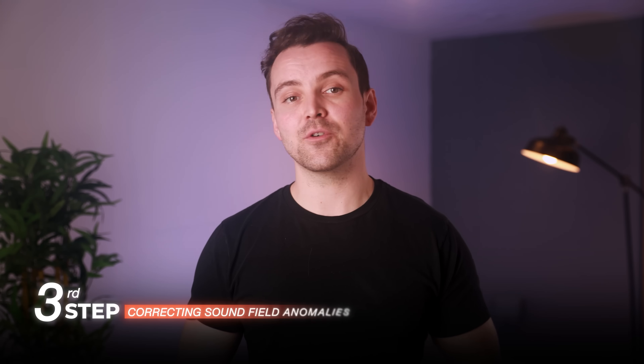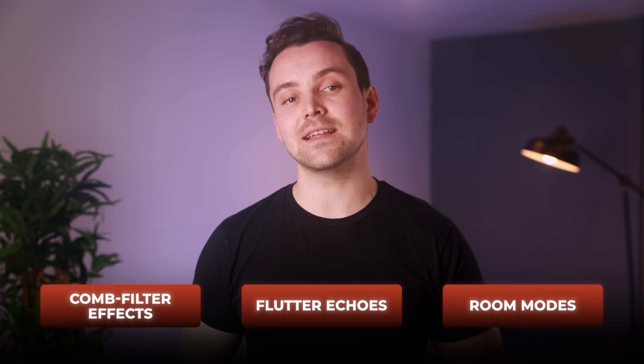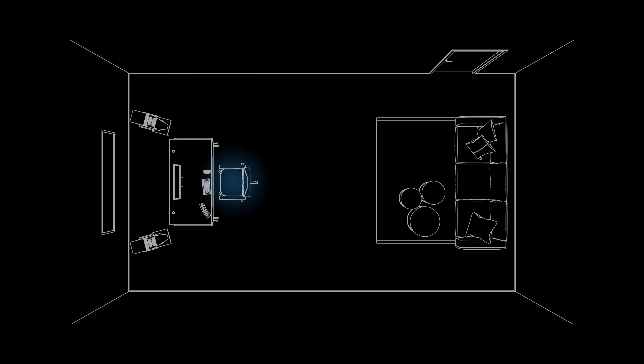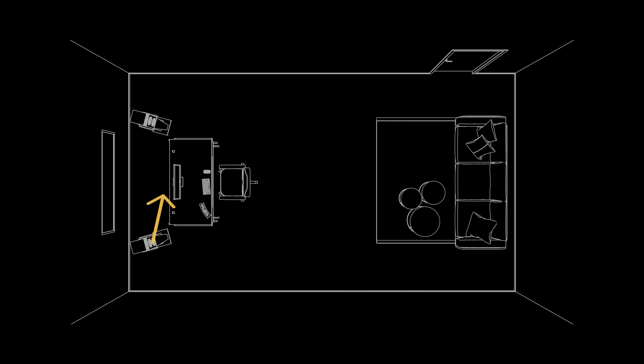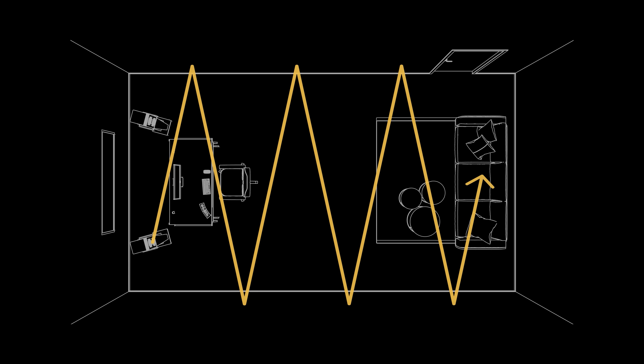Some sound issues come from how sound waves interact in a room. Common sound anomalies such as comb filter effects, flutter echoes, and room modes also need attention. Comb filter effects occur when direct and reflected sounds combine, creating peaks and nulls in frequency response — this can be mitigated by treating first reflections with absorptive panels. Flutter echoes arise when sound bounces between two parallel walls, making a weird ringing effect, and are reduced by distributing absorptive panels throughout the room.